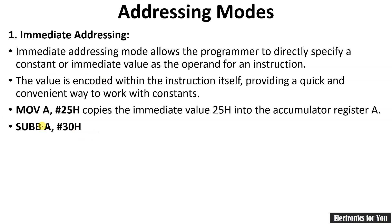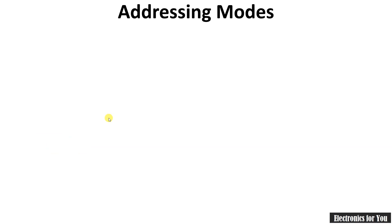Here, the data 25 is copied into accumulator A — this is the function of immediate addressing mode. Here is another example: it is a subtraction operation where data #30 is subtracted from A. So the content of the accumulator minus 30, and the result will be stored in the accumulator.